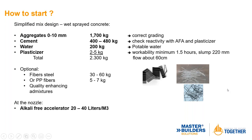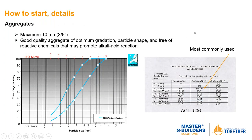Number one key thing: get your aggregates right — high quality, 10 mm maximum (European colleagues prefer 8 mm maximum), with good quality aggregate and optimum gradation, good particle shape, and free of reactive chemicals that may promote alkali-aggregate reaction. The most commonly used gradation for myself in North America is the ACI 506 gradation number 2. On some large projects in Canada — especially in the GTA, Toronto area, Montreal, and Vancouver — you're also seeing EFNARC-type specifications for aggregates.